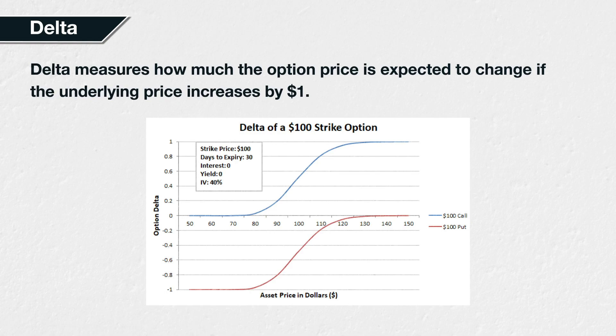Similarly, delta is negative for put options, because if the underlying price increases, the right to sell that asset at a fixed price should logically decrease in value. If you have the right to sell an asset at $10, for instance, that right should logically have a lower value if the asset is trading at $10 than if it were trading at $9. A put option, of course, is just the right to sell some asset at the strike price.